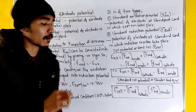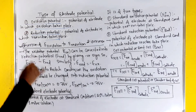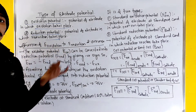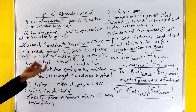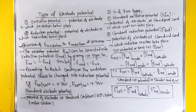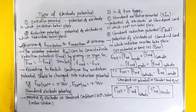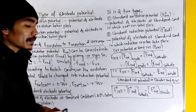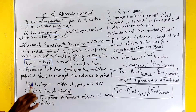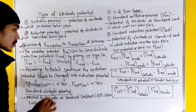Now let's see the conversion of oxidation potential — that means electrode potential from oxidation to reduction. Oxidation potential can be converted into reduction potential by giving it a negative sign. Similarly, using British conventions, oxidation potential can be converted into reduction potential.